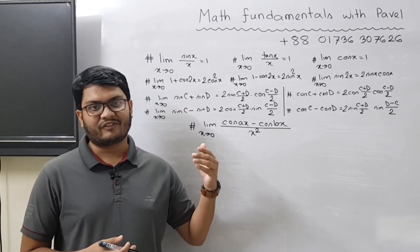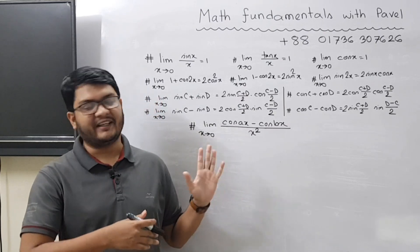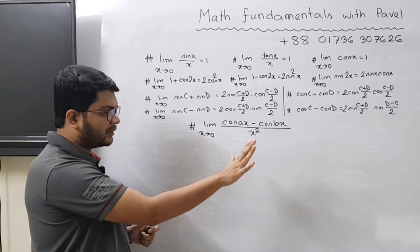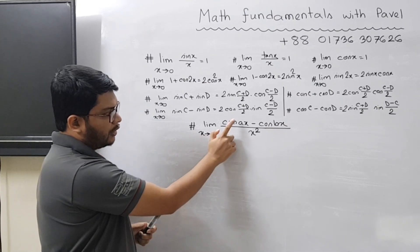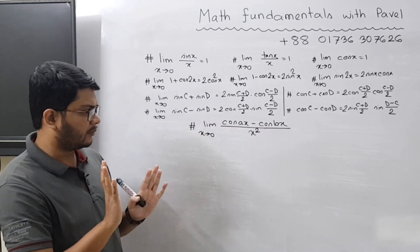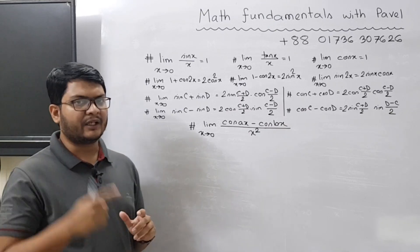That will help you understand this problem very easily. Let's start. As you can see, the problem statement here: limit x tends to zero, cos ax minus cos bx divided by x square. Before starting the solution, you need to fix in your mind what would be the approach to solve this problem.